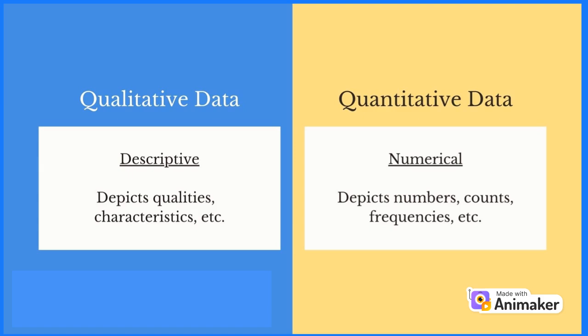The second type is quantitative data. It's numerical, depicts numbers, counts, and frequencies. For example, the number of students or the speed of cars.